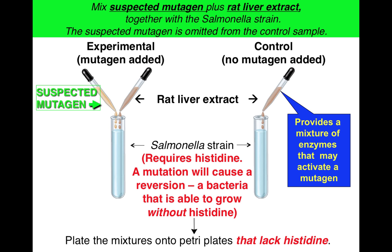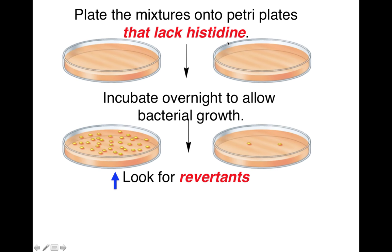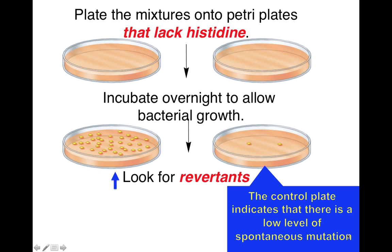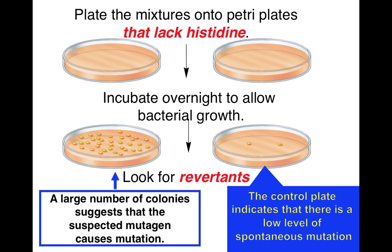You're going to place these mixtures onto petri dishes that lack histidine. So what are you looking for? You're looking for revertence back to bacteria that can grow in the absence of external histidine by making their own. You plate the mixtures onto petri dishes that lack histidine, incubate them overnight, and look for revertence. The control plate indicates that there's a low level of spontaneous mutation — you'll probably end up with a couple of colonies on this petri dish but not very many. However, on your plate where you mixed your suspected carcinogen, if you end up with many colonies growing, then it's quite possible that your substance is a mutagen. A large number of colonies suggests that the suspected mutagen caused the mutation and the revertent back to wild type as far as histidine biosynthesis is concerned.